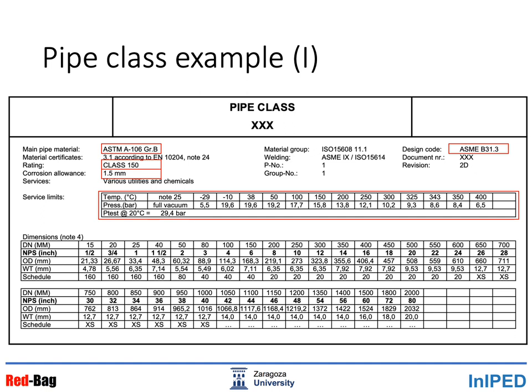In the top right corner we have the design code. In this case we chose ASME B31.3, which is the American code for process plants. Below this information we have a long, narrow table where we show pairs of values of temperature and pressure — this is called the pressure-temperature rating, which we will discuss in detail later on.